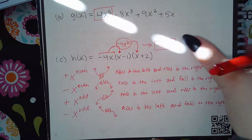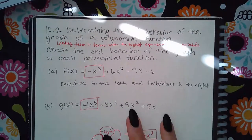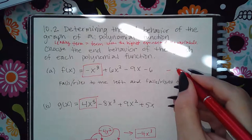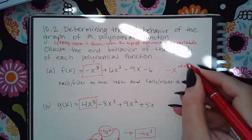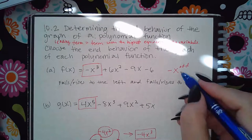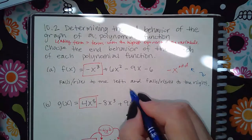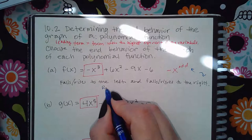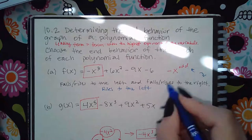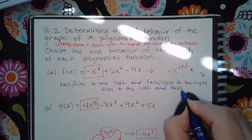Looking at the first problem, notice this is a negative X to the odd exponent. That means the end behavior is going up on the left and down on the right, so: it rises to the left and falls to the right.